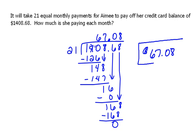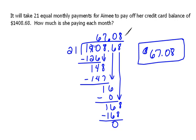Now, if for some reason our numbers did not work out this nicely and it just kept going, then because we're talking about money, we would want to round to the nearest hundredth so that we have dollars and cents.